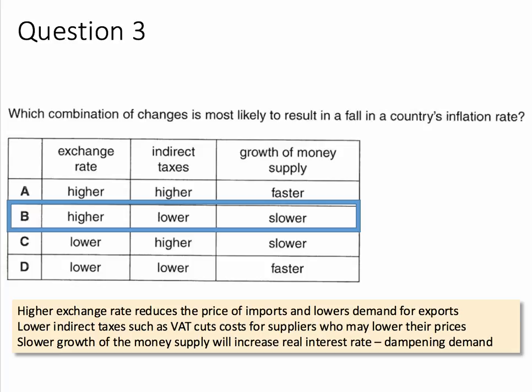A fall in indirect taxes, such as VAT or duty, cuts costs for suppliers, and they may choose to bring down their prices as well, causing inflation to fall. And if the money supply is growing less quickly, then using the quantity theory, there's less money floating around in circulation. In theory, that increases real interest rates in the economy, which should help dampen down demand and reduce the risk of rapid money and credit growth causing inflation.